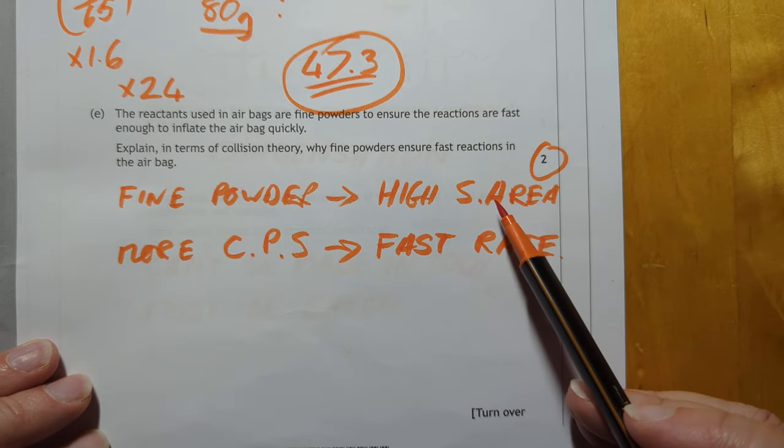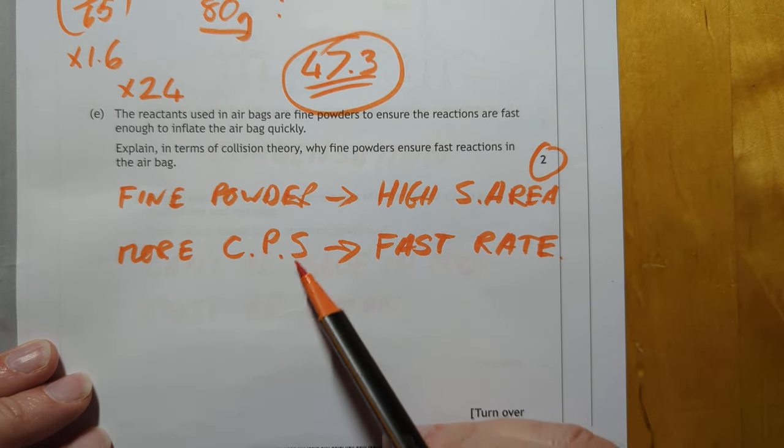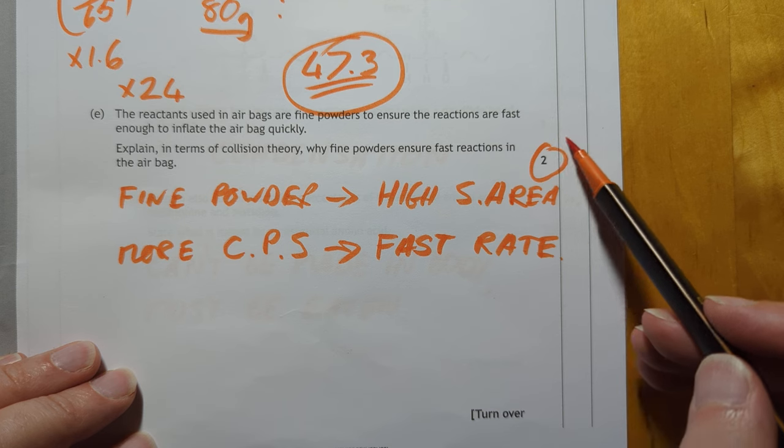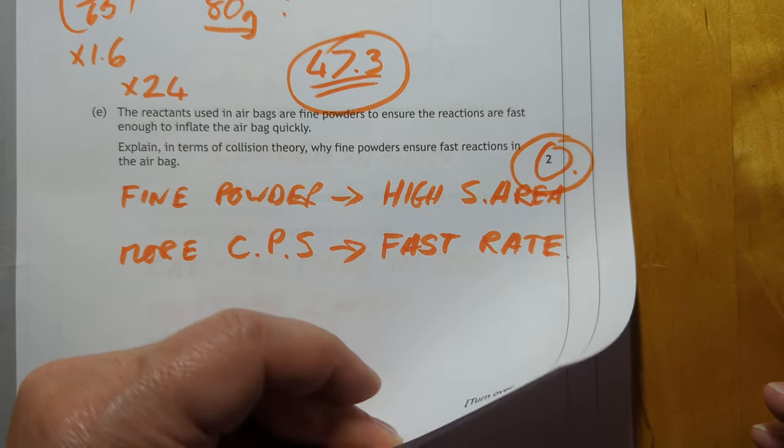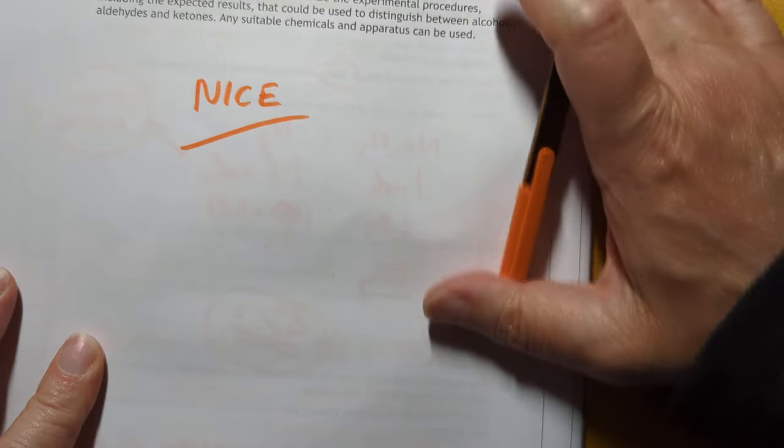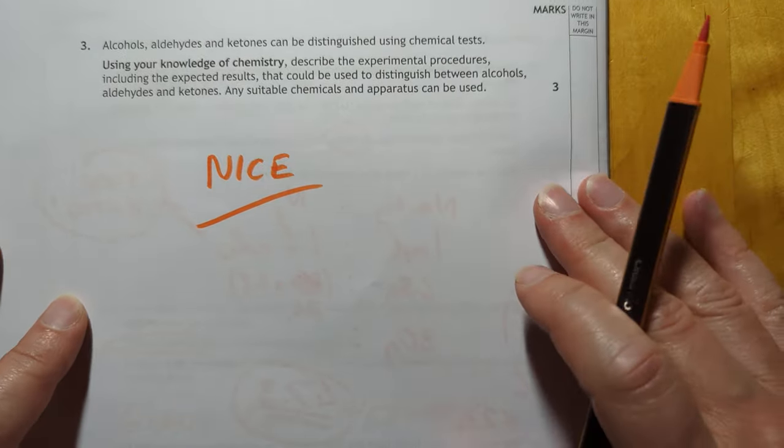Fine powders have a high surface area. More collisions per second. Therefore, a faster rate. I have no clue how they're going to allocate the two marks for that. I should get myself a button that says I have no clue. I'm just press it many times tonight. It is late the night. I'm very tired.